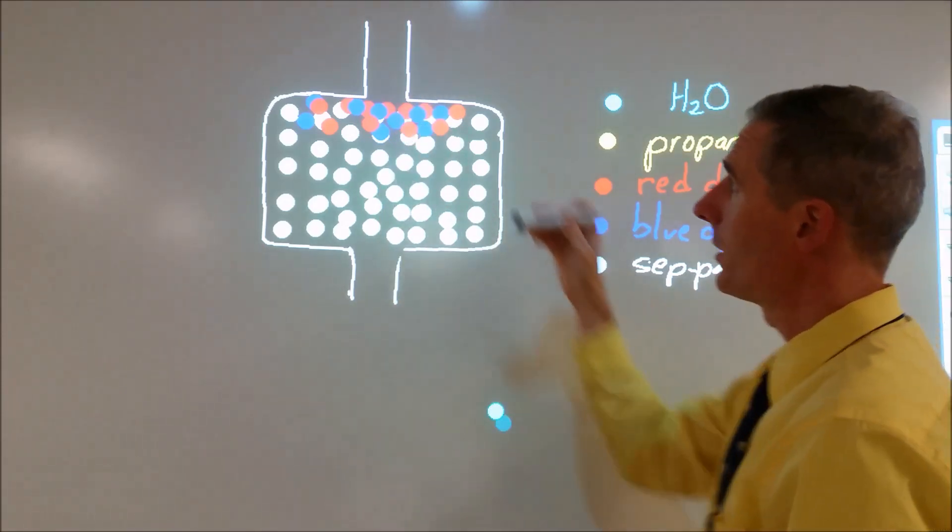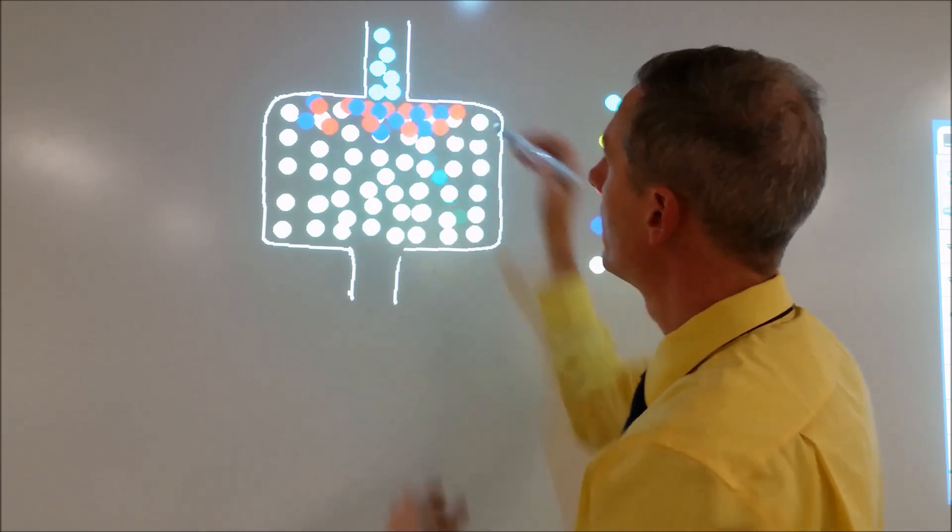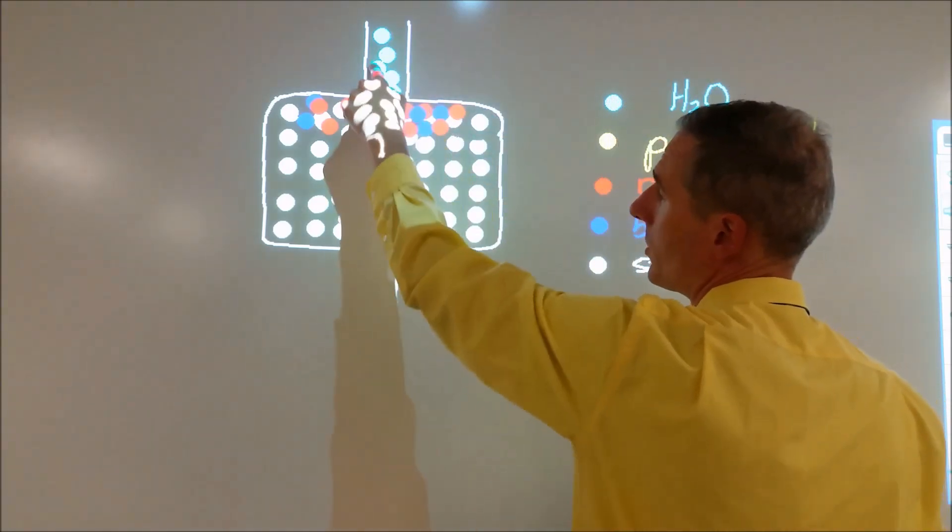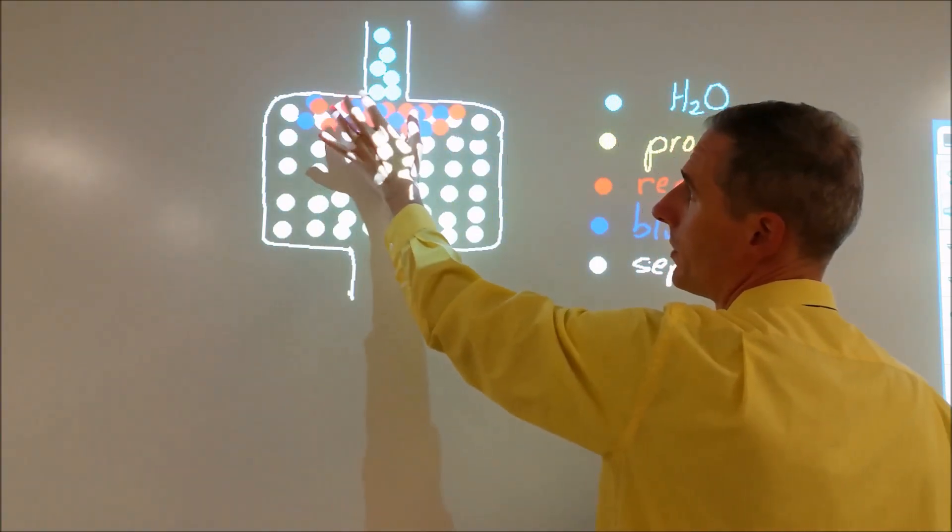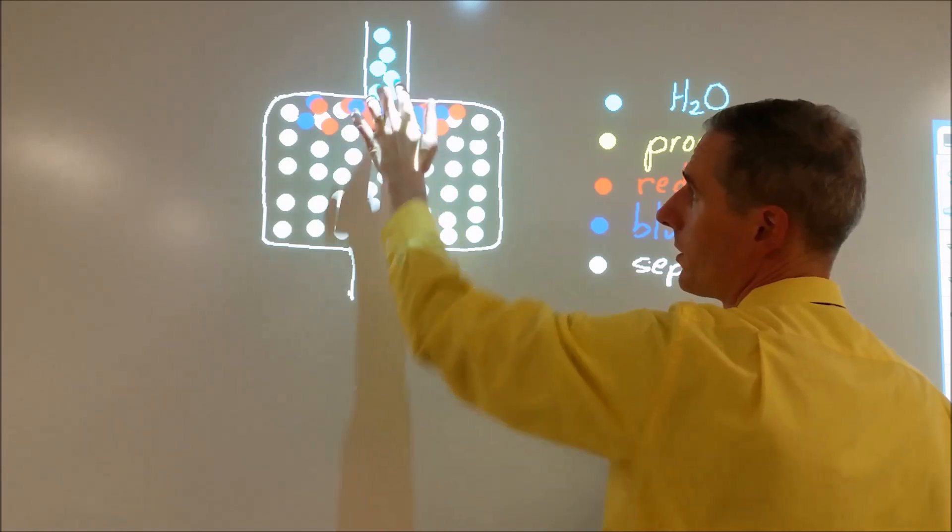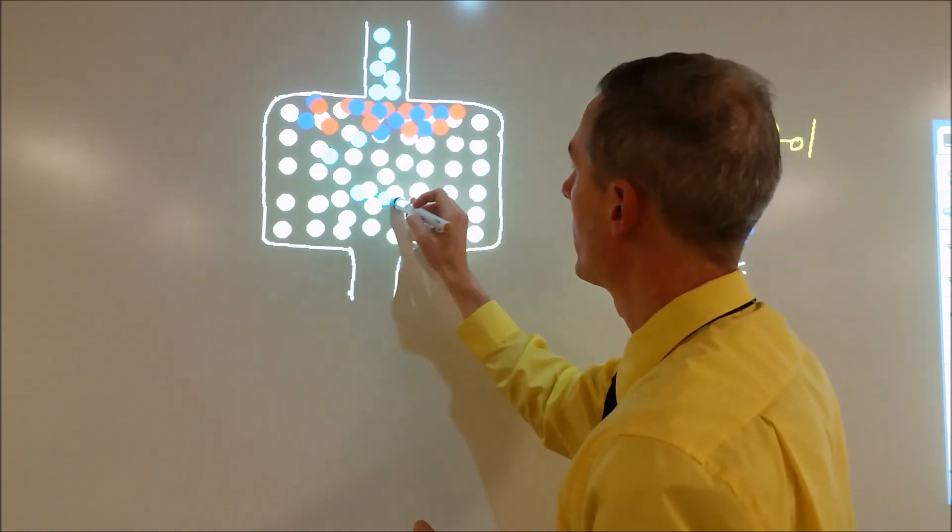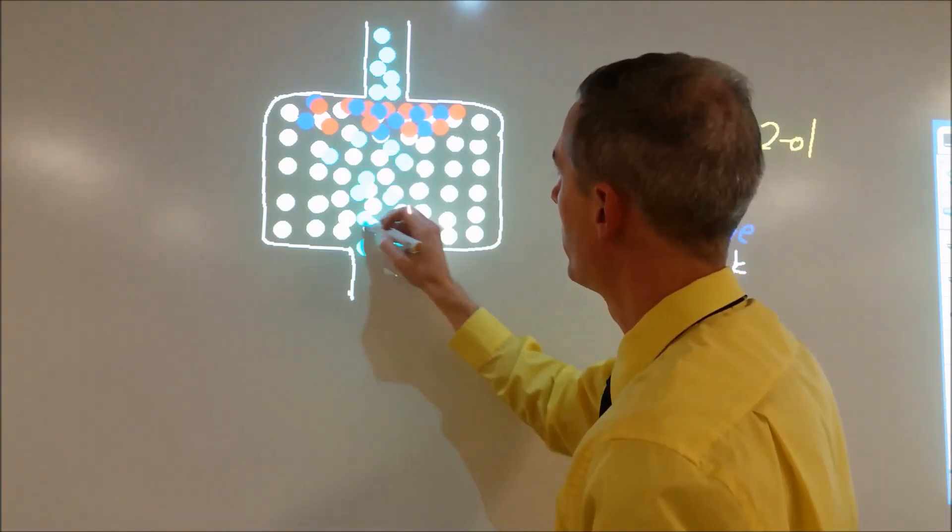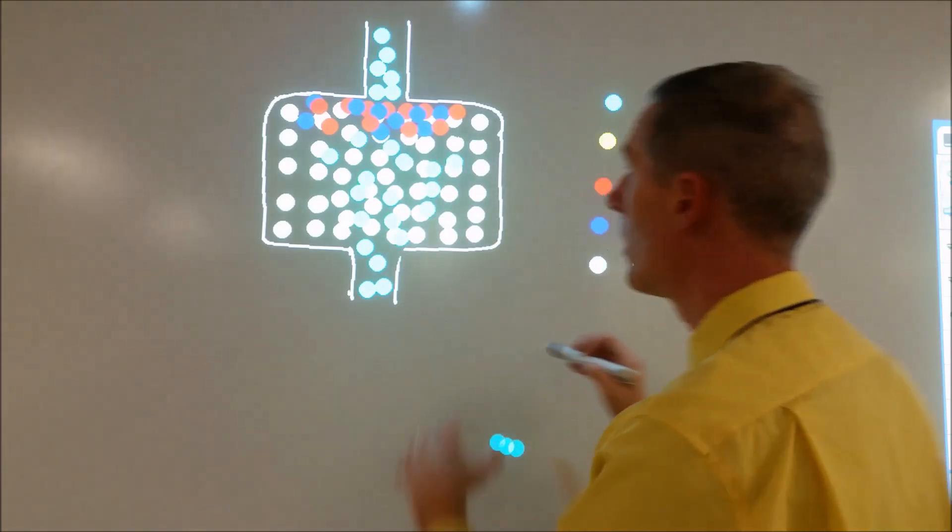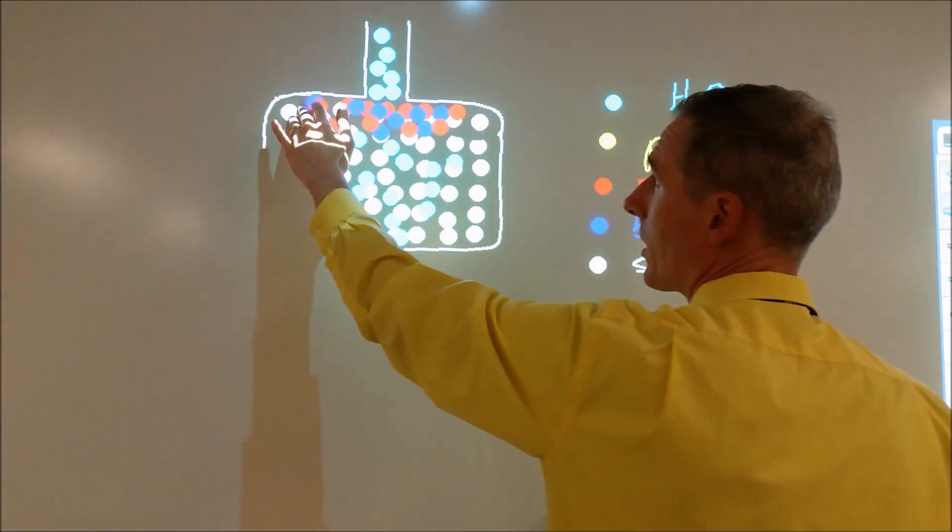When we start to flood this apparatus with water, even though originally the grape Kool-Aid is dissolved in that water, once it gets into the column these red and blue particles stick to the white ones. Then the rest of the water continues through and leaves at the bottom. So these just kind of stick on the column.